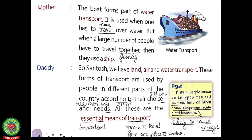We have land, air, and water transport. The selection of different means of transport depends on your choice or option — it means you can choose any means of transport according to your wish. At the same time, it depends on your need and requirement also. If you have plenty of time, you can go by car, bus, or train. But if you have less time and need to reach early, then you select a fast mode of transport like aeroplane or fast trains like Shatabdi. You should also have enough money, as air transport is more expensive than land transport.